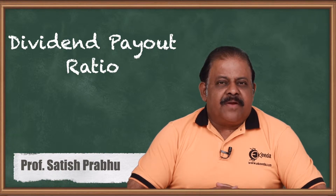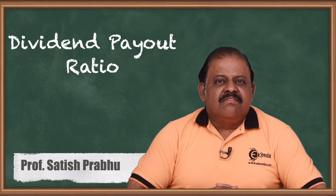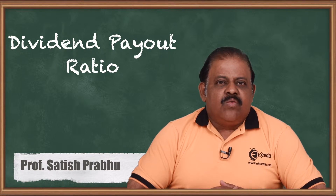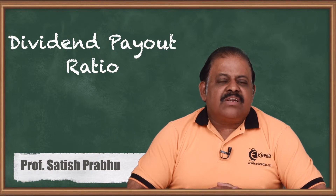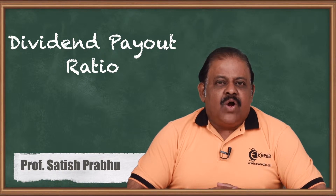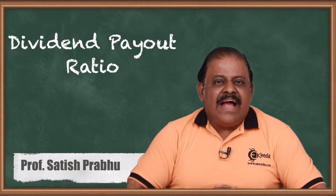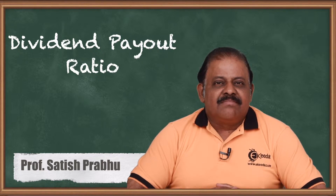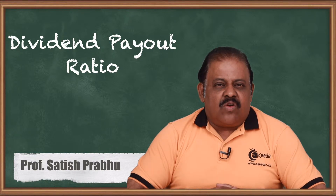Dividends are paid first to preference shareholders at a fixed rate and then to equity shareholders. In the case of equity shareholders, whatever profit is available for distribution to them, the whole amount is not given as dividend — some part is given as dividend and some part is kept as reserves. This ratio shows us what part of earnings available to equity shareholders is kept by the company as reserves and the amount of dividend paid out of profit.